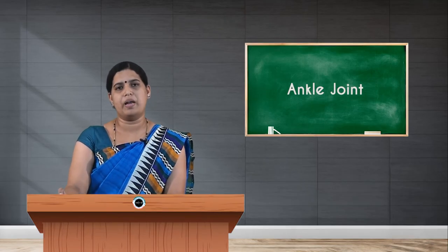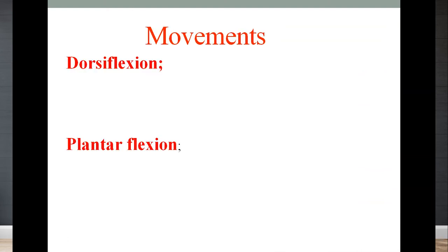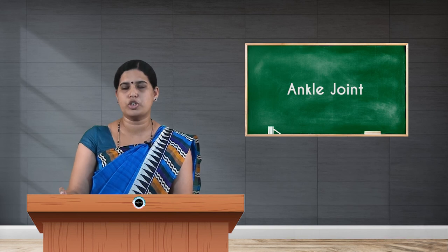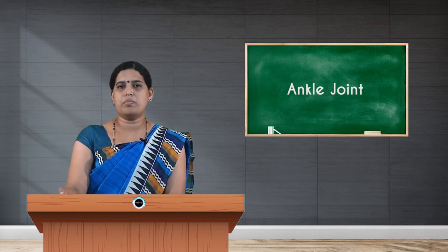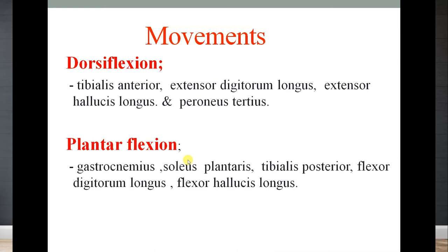The movements of the ankle joint are dorsiflexion and plantar flexion. The dorsiflexor muscles are from the anterior compartment of the leg: tibialis anterior, extensor digitorum longus, extensor hallucis longus, and peroneus tertius. The plantar flexors are from the posterior compartment: tibialis posterior, flexor digitorum longus, flexor hallucis longus, and the superficial calf muscles — gastrocnemius, soleus, and plantaris.